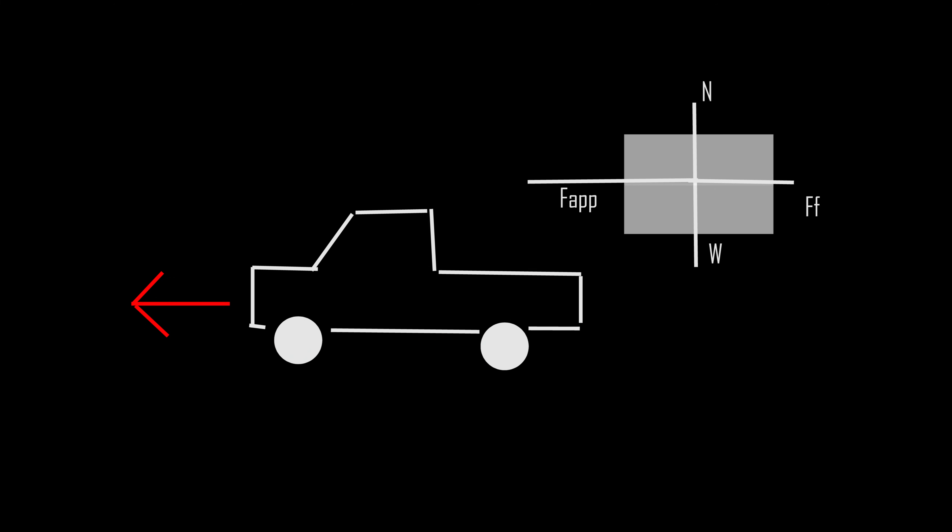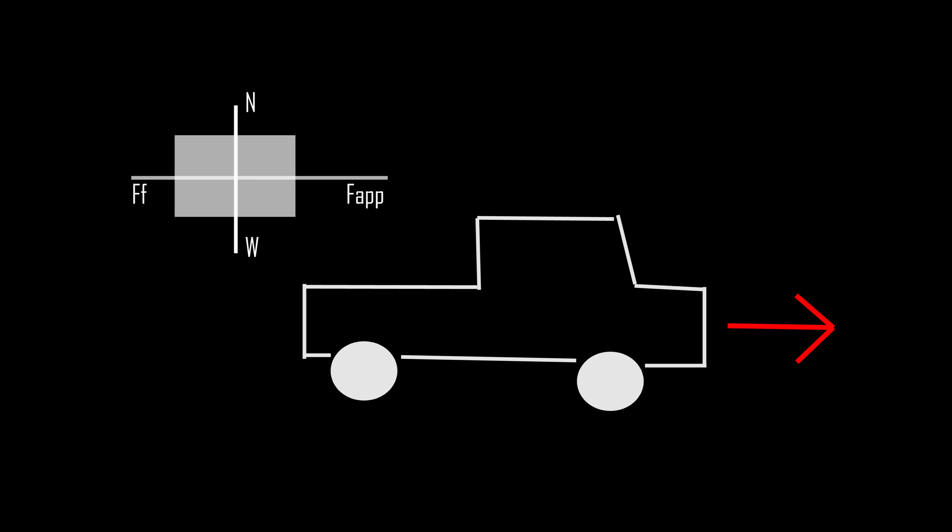Here is a free body diagram illustrating the truck at the moment shown by the first arrow. There are four forces: the normal force from the ground, the weight force from the car, and the friction force going against the applied force of the throttle from the truck. Here is a free body diagram showing the truck at the moment shown by the second arrow. The car is now traveling in the positive x-axis direction. The forces are the same as before, although the friction force and applied forces are in opposite directions.